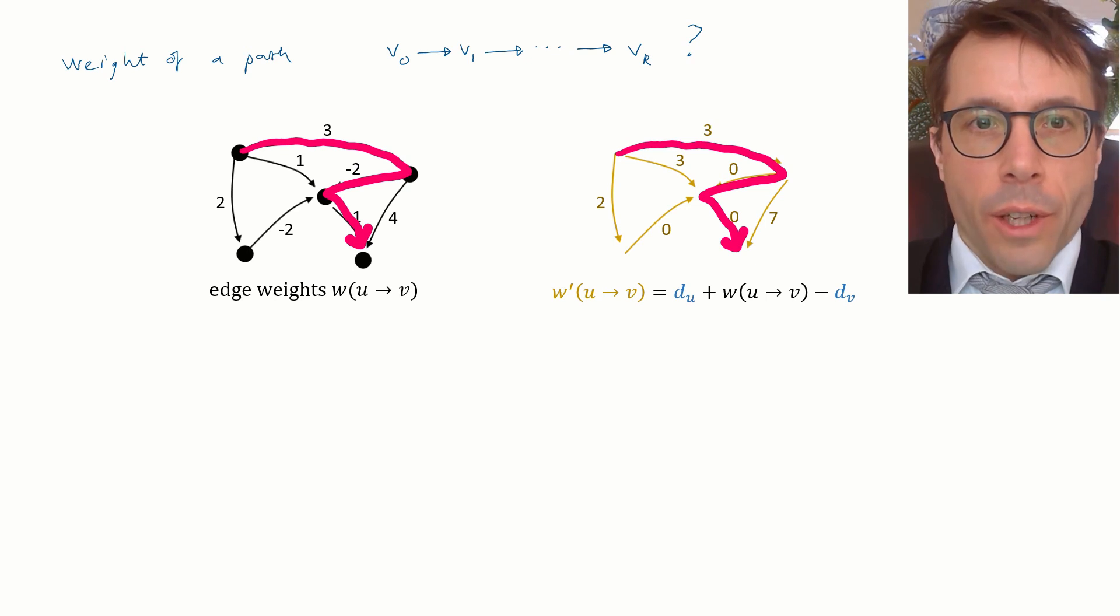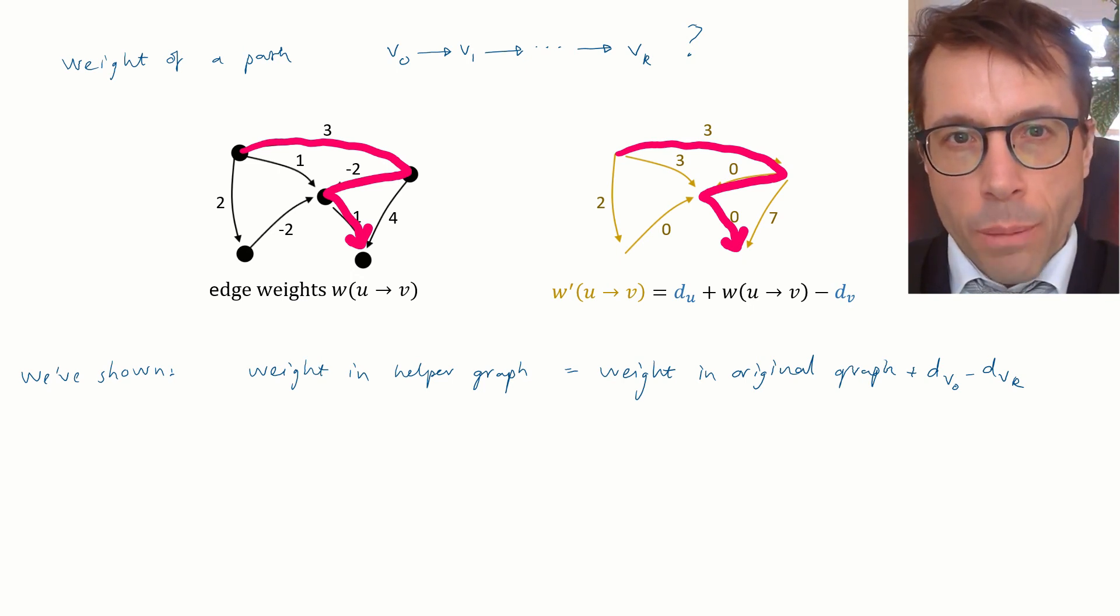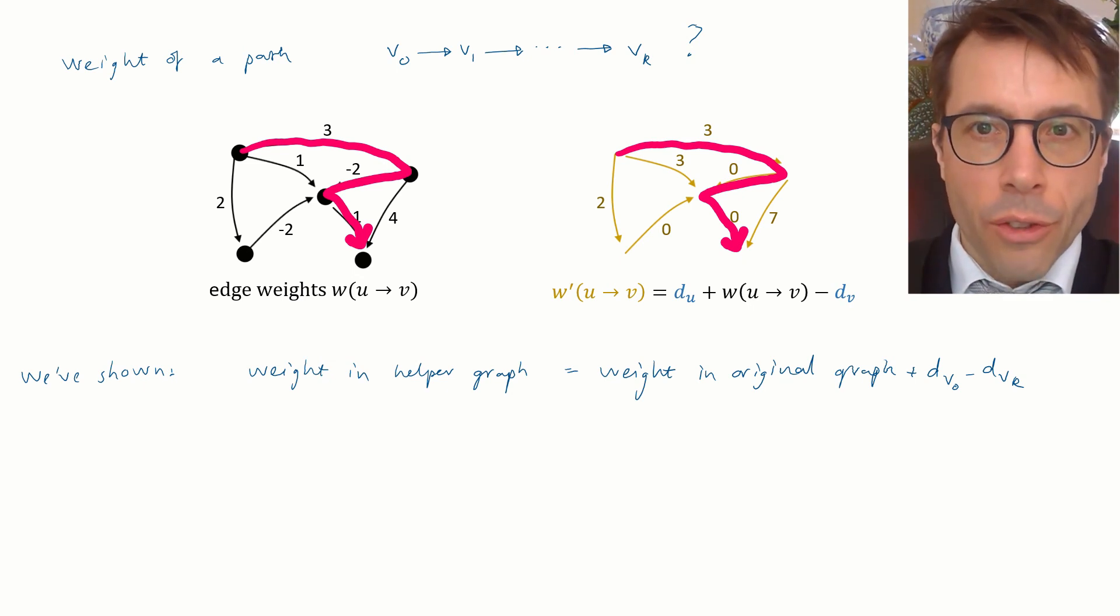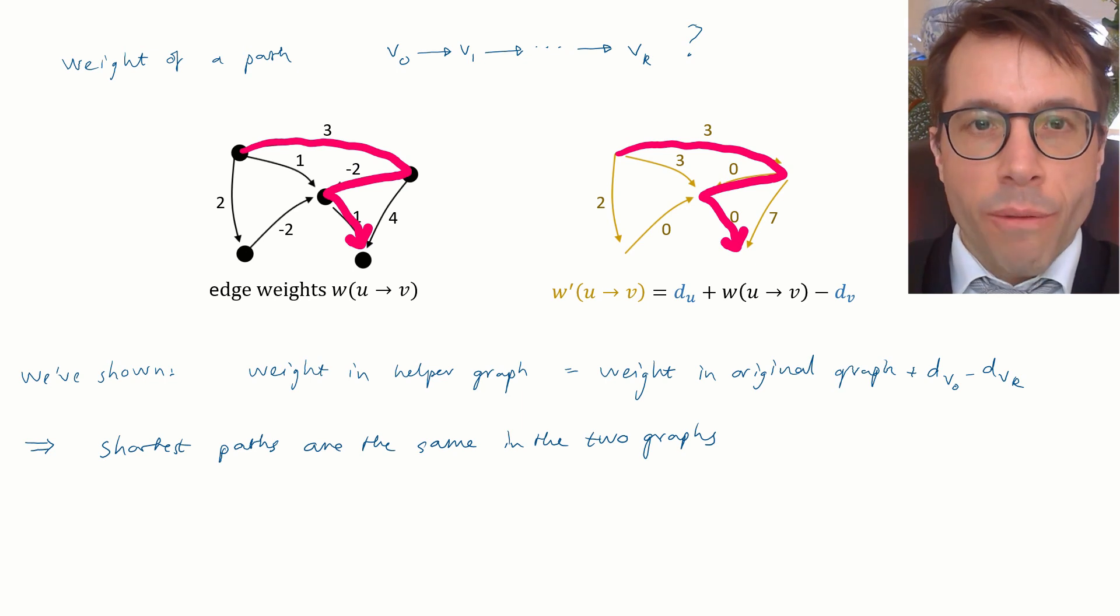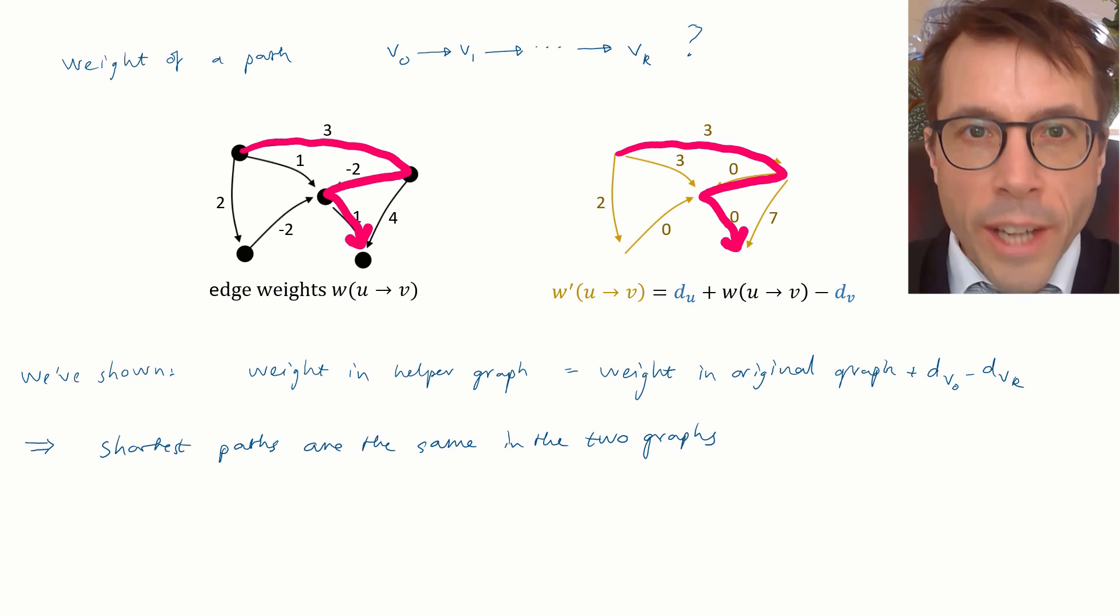Okay, let's restate our finding. We've shown that the weight of any path in the helper graph is equal to the weight in the original graph plus a correction term. And the correction term depends only on the start and end vertices, not on the rest of the path. Therefore, if we find the shortest path between a given pair of vertices in the helper graph, the same path must be optimal in the original graph. The weight of the path will be different, of course, and this formula tells us exactly what the offset is. But the identity of the path, the sequence of vertices, that's got to be the same. And that's the magic trick behind Johnson's algorithm.